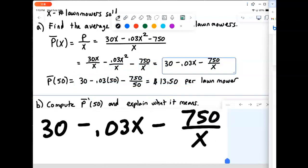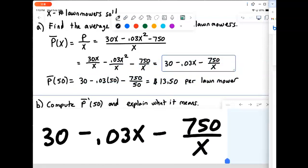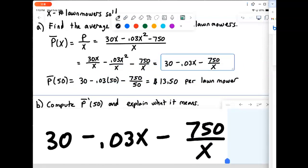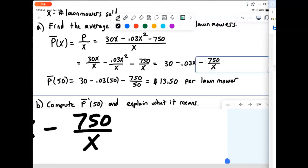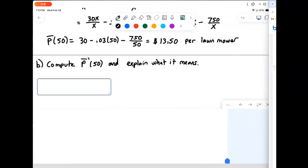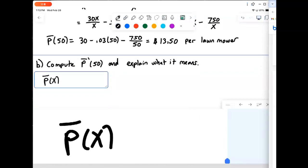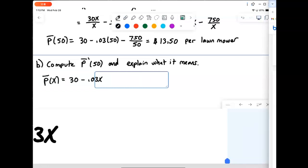Okay, so let's do that. So we have our P bar function here: 30 minus 0.03x minus 750 over x. So first thing I'm going to do before I compute the derivative is I'm going to rewrite that in a format that's a little bit better for the derivative, particularly that 750 over x part. So P bar of x is just 30 minus 0.03x minus 750x to the minus 1.